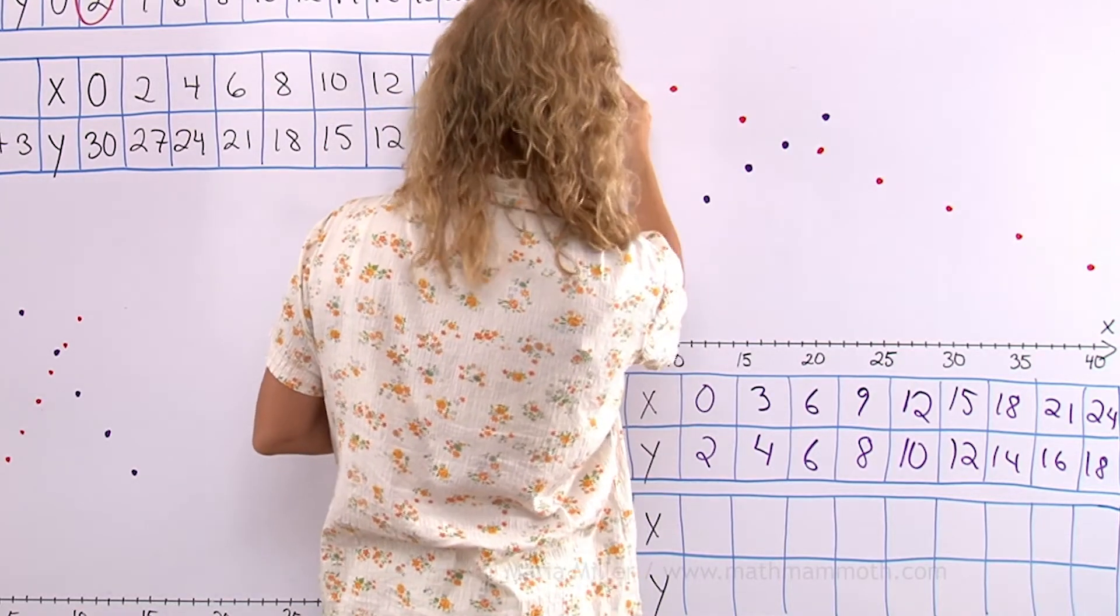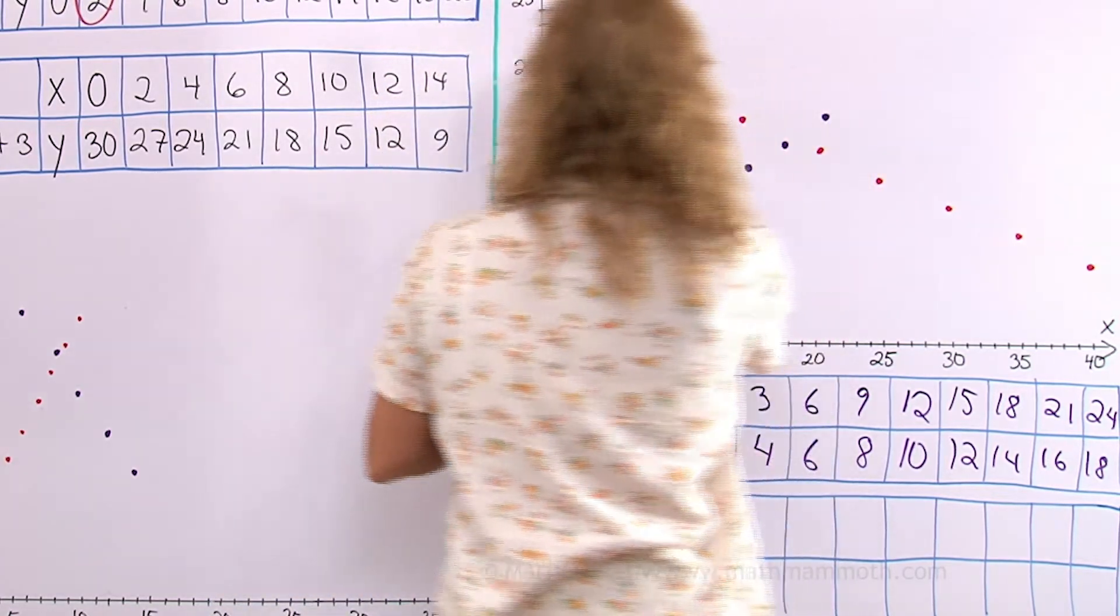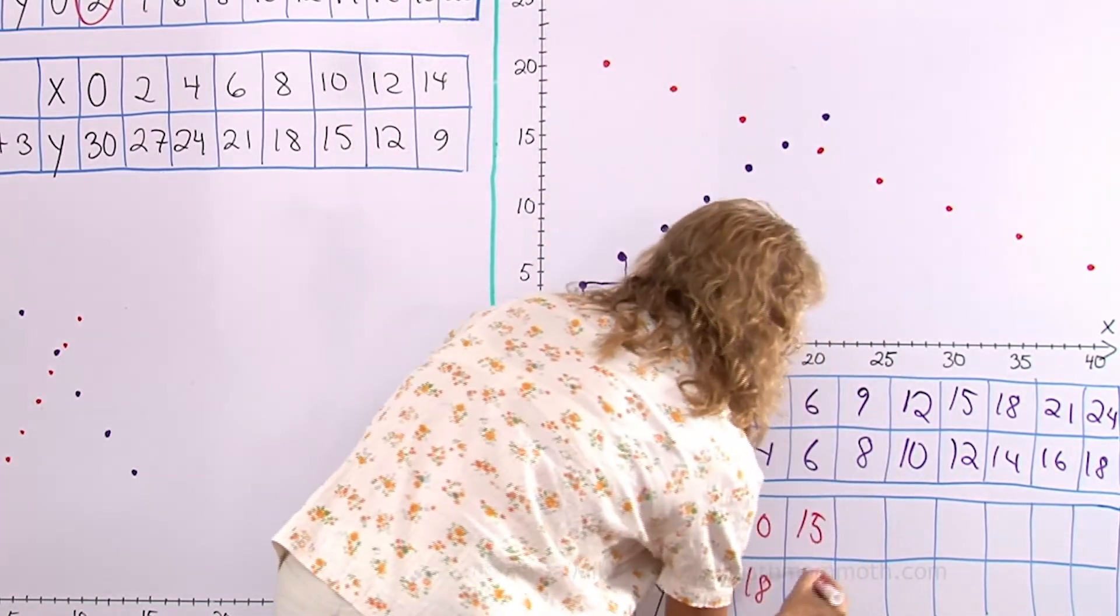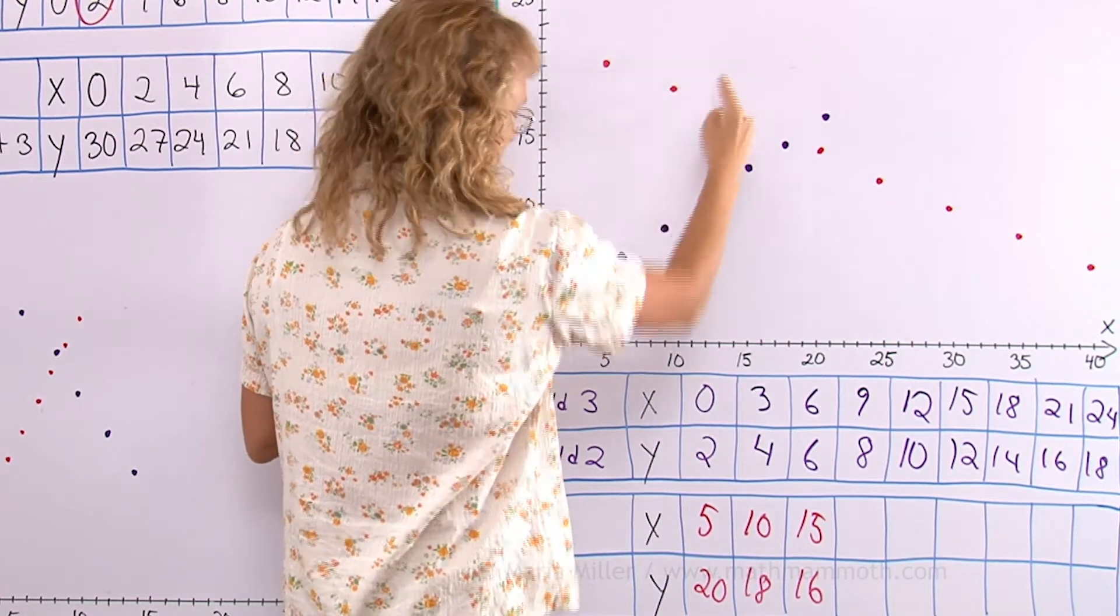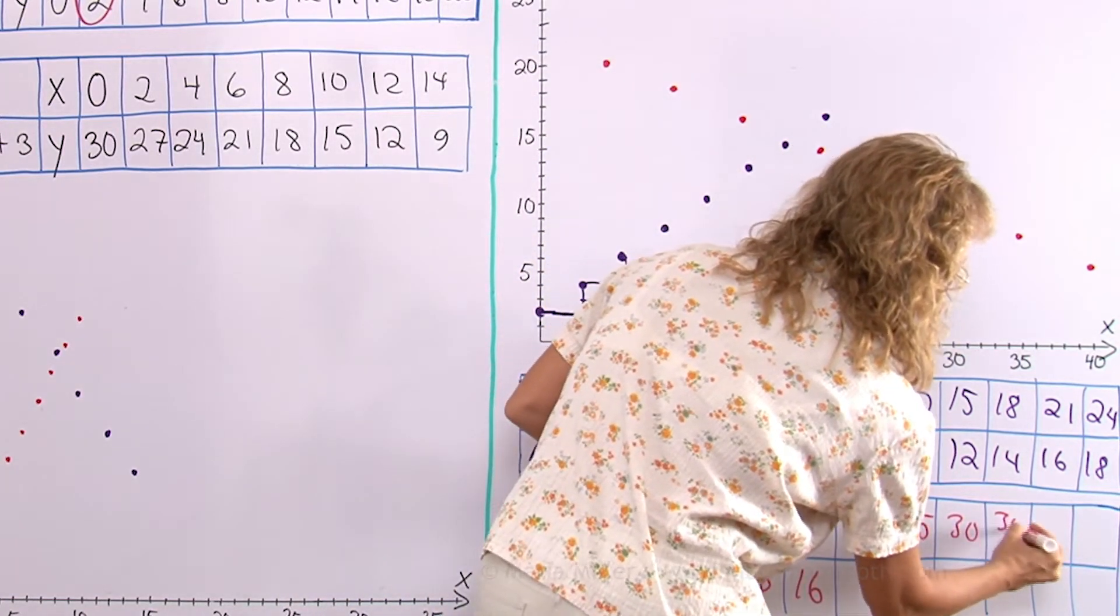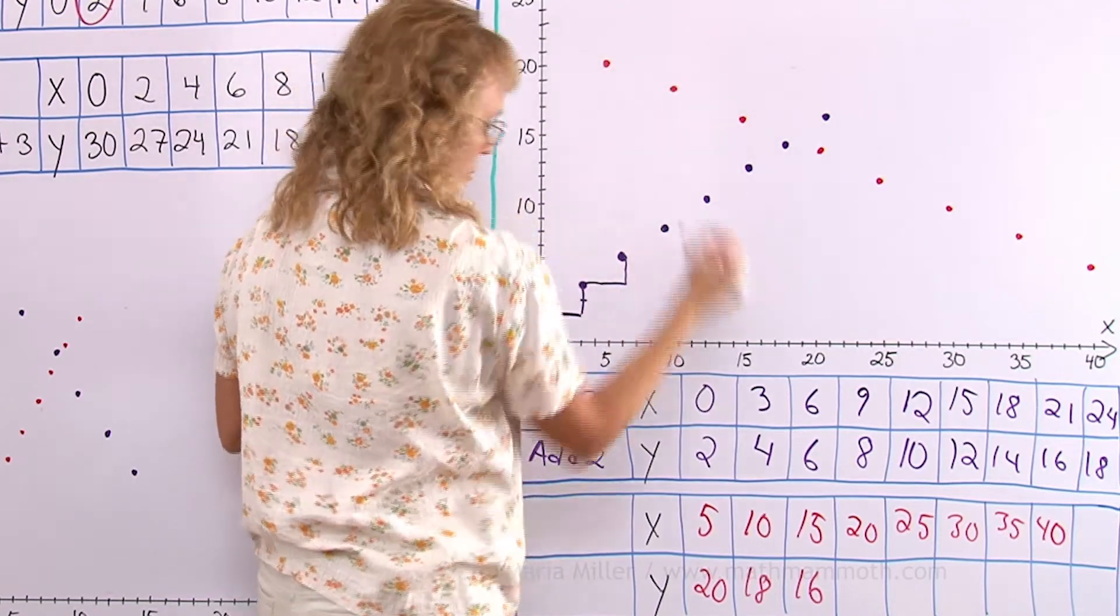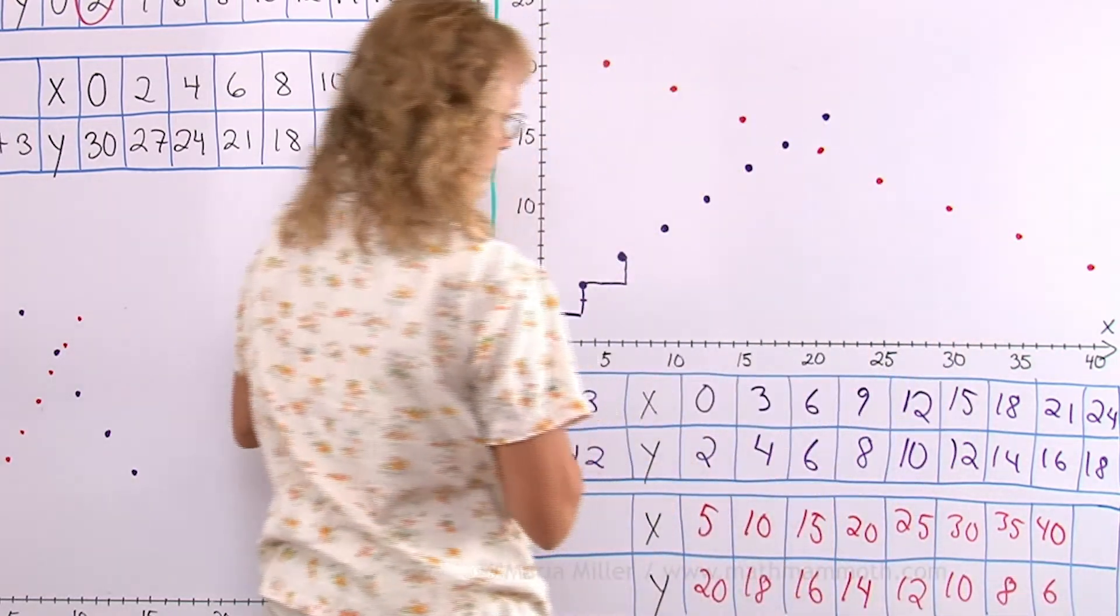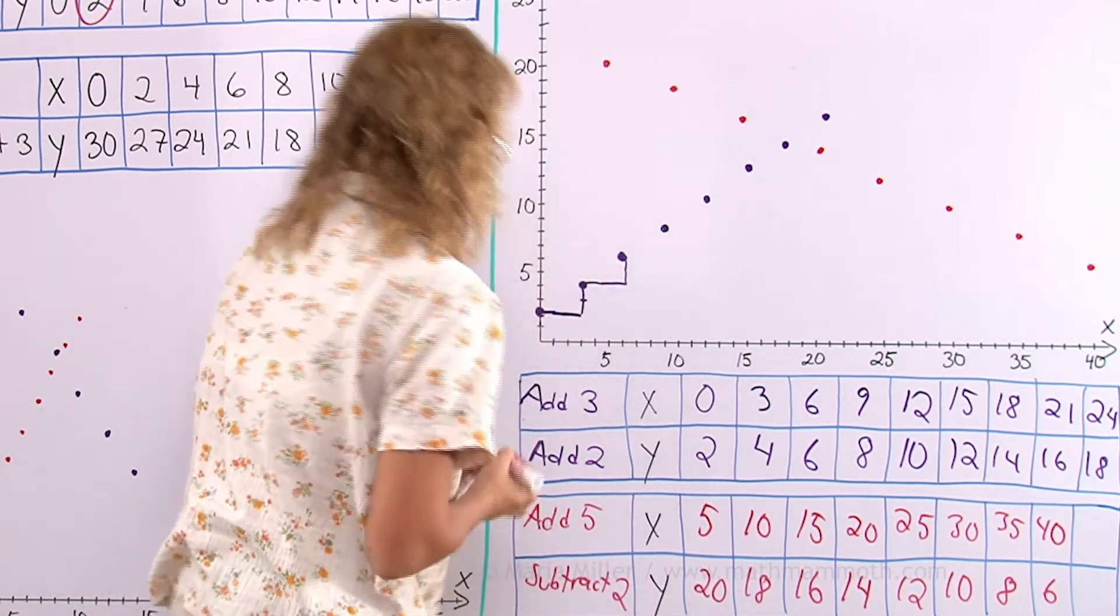Now let's try the red pattern. This one starts here at 20 and 5. Then I have 10 and 18. Then 15 and 16. Can you guess what my pattern will be? Each time I go in X direction. So there's 20, 25, 30, 35, 40. And 40 is the last one here. And then as I go 5 this way I drop down 2. Each time I drop down 2 or subtract 2. So the rule is here add 5, and here it was subtract 2.